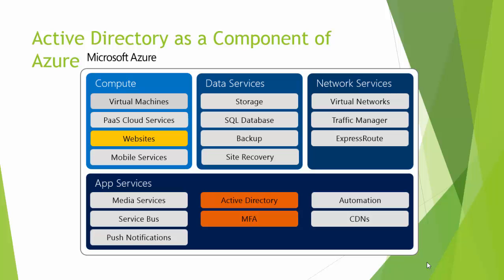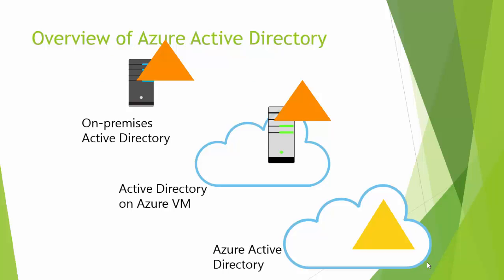Let's talk about how Azure Active Directory and on-premises Active Directory work together. There are two scenarios. The first is where we don't have on-premises infrastructure and all applications are on the cloud — in that case we only need Azure Active Directory, which is called cloud-based authentication only.